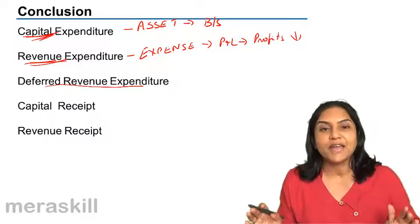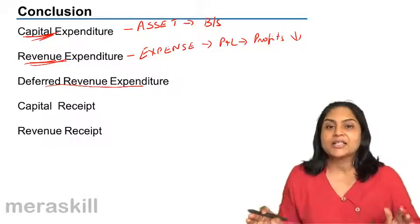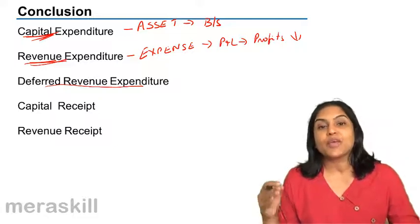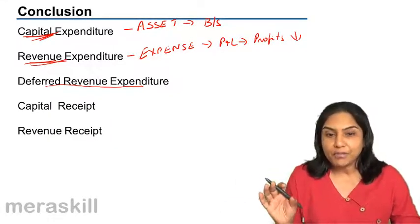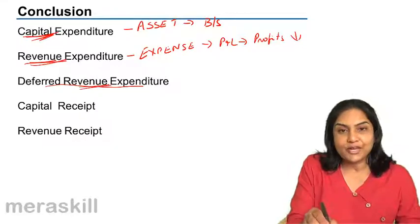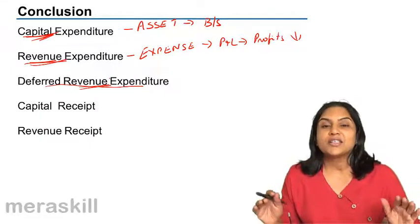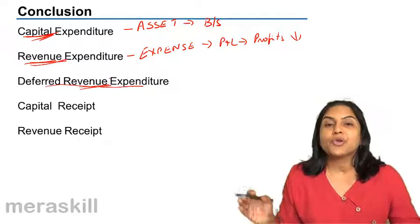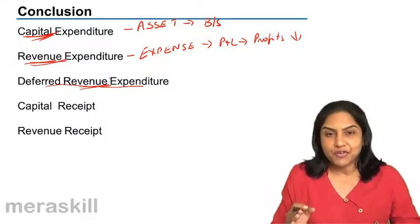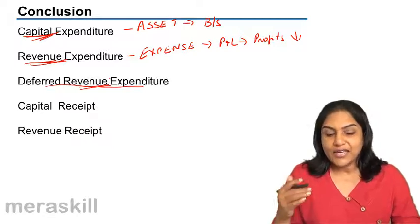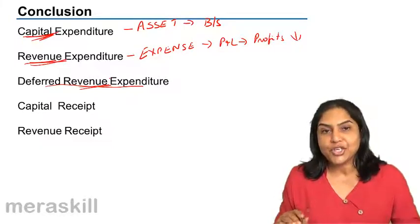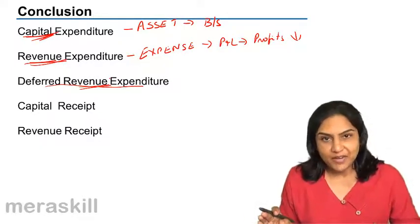One example is a very heavy advertising campaign. The benefit of this campaign, we expect to get over, let us say, five years. Advertising normally is a revenue expenditure. However, since this is a huge amount, we don't want to affect the profits of the first year only. And we also believe that the benefits of this expenditure would be got over the next five years.